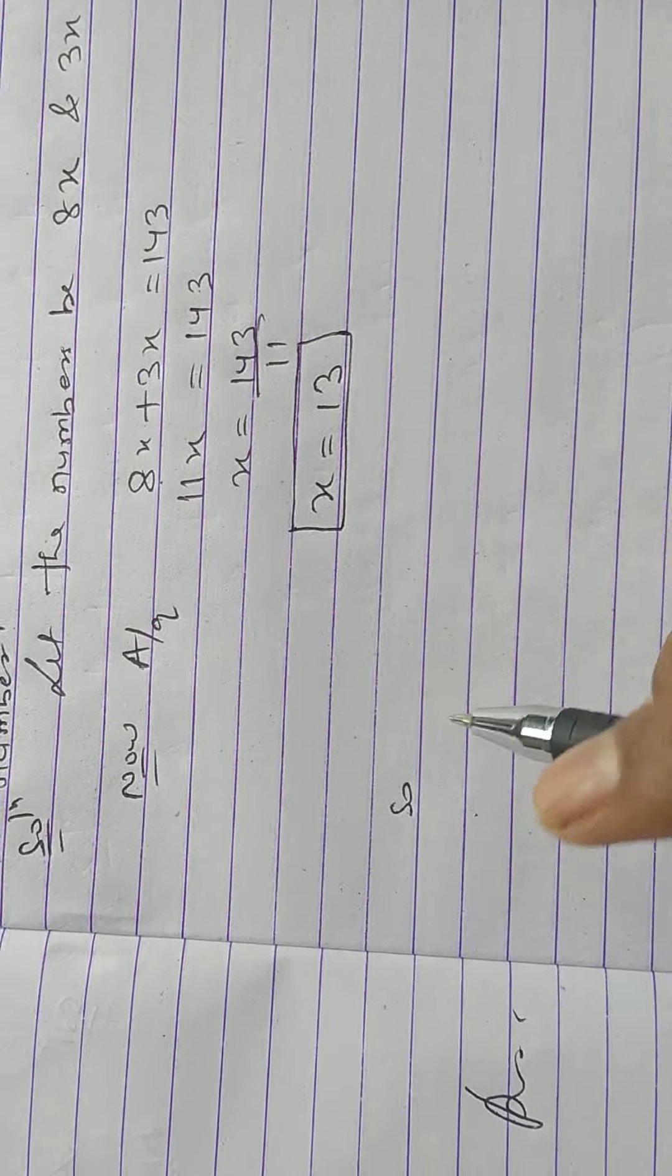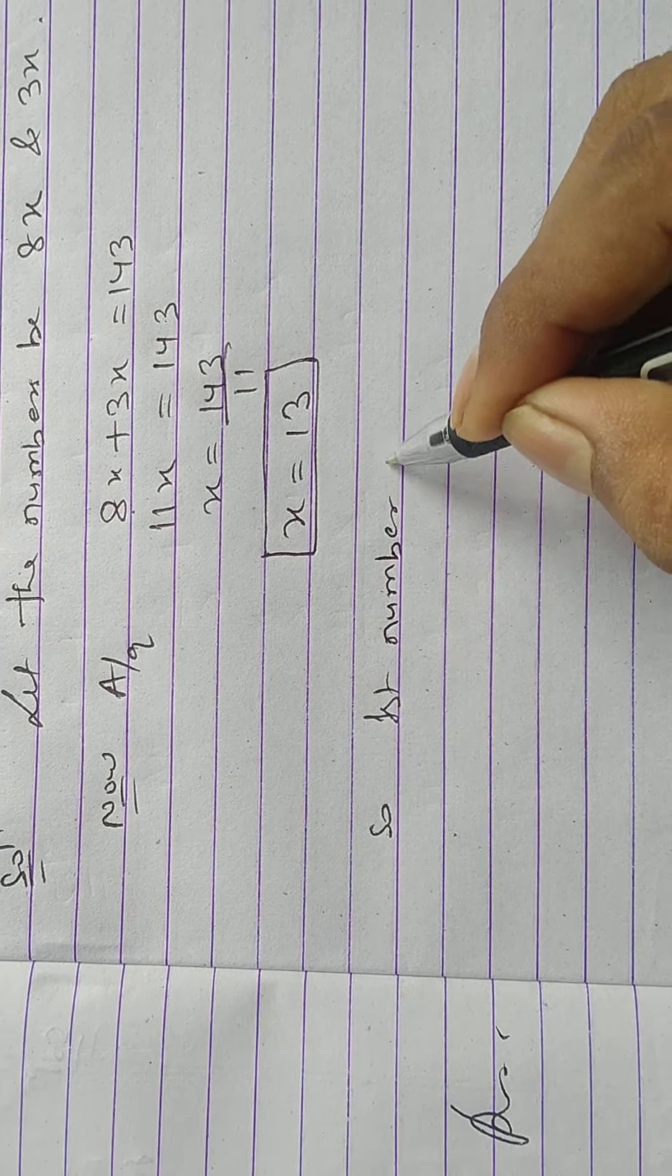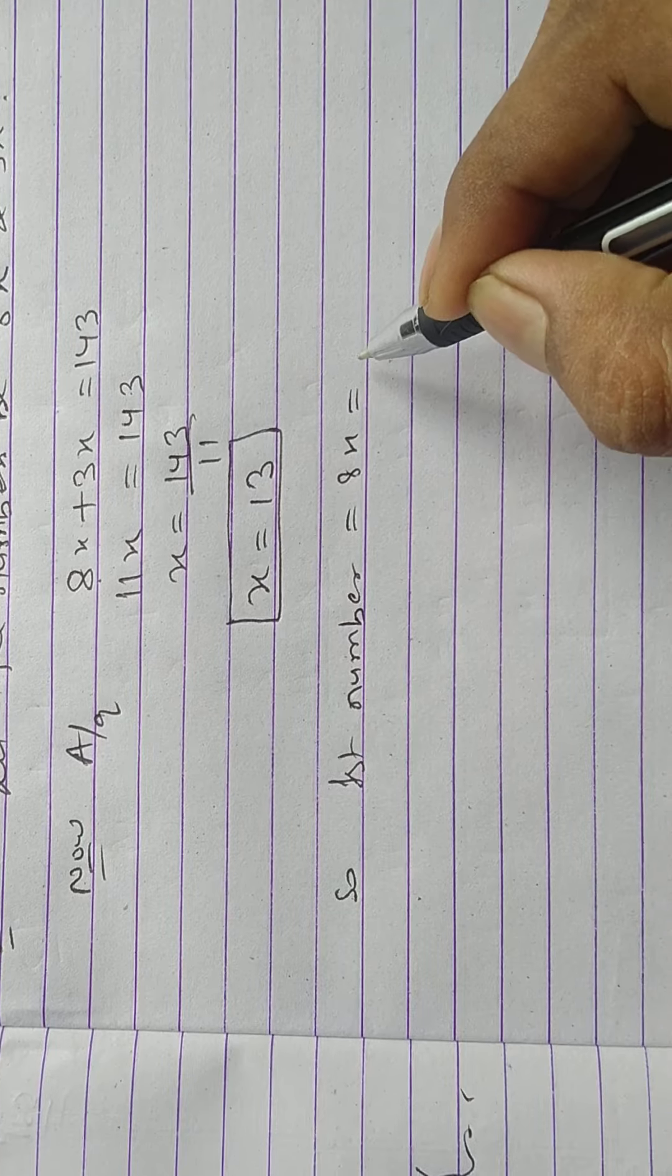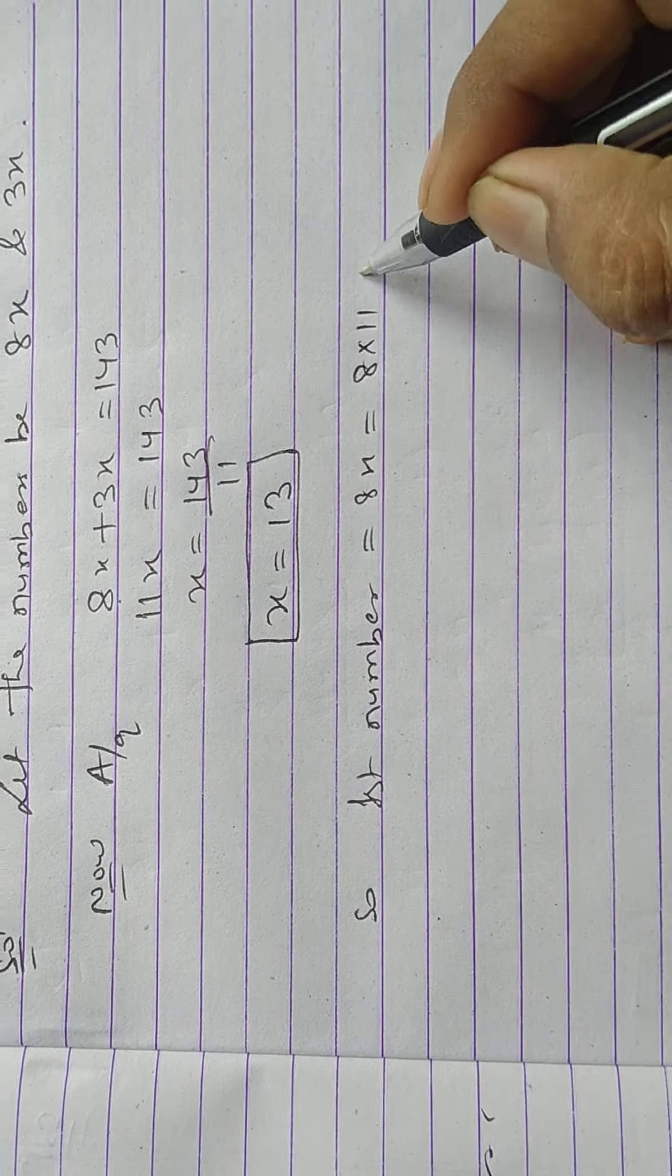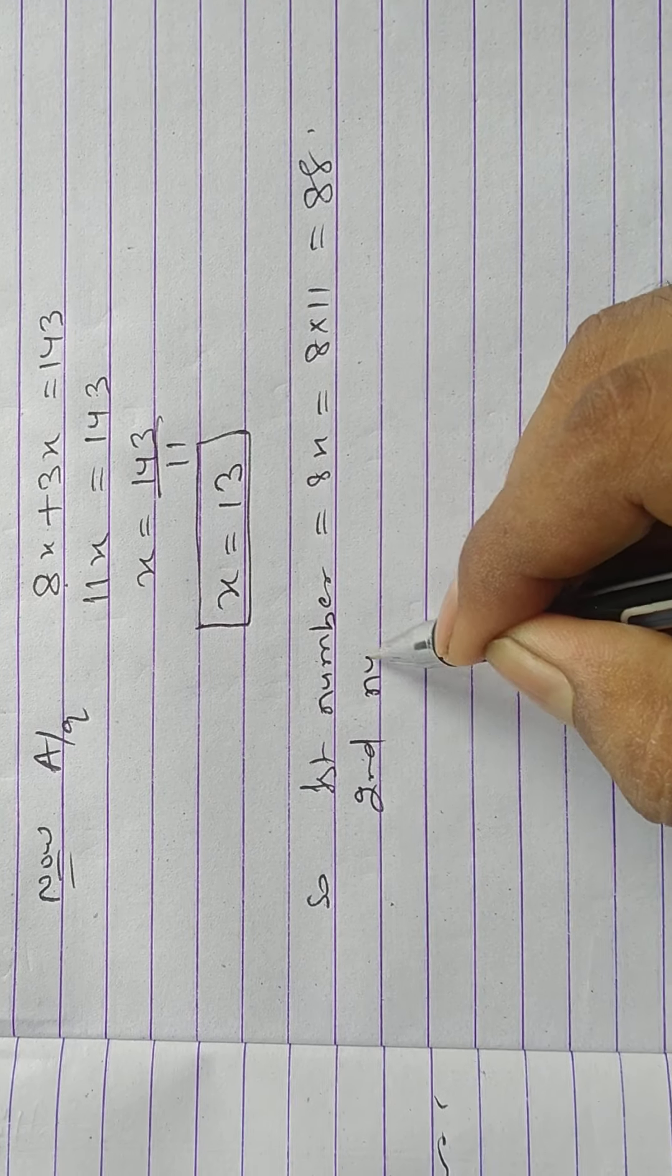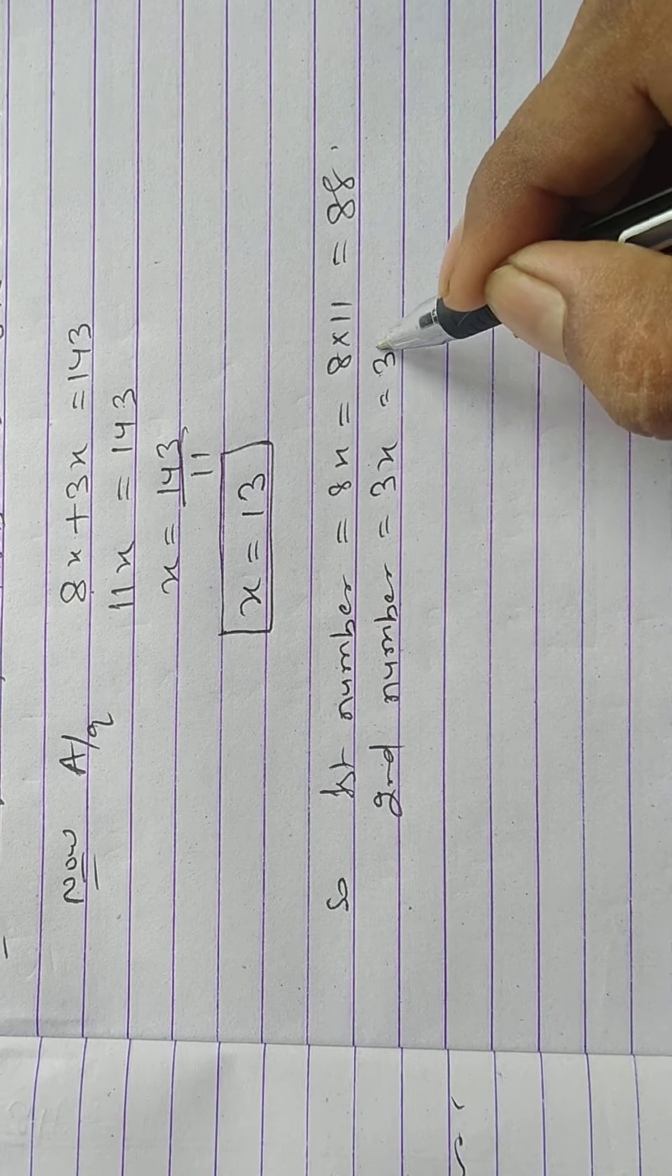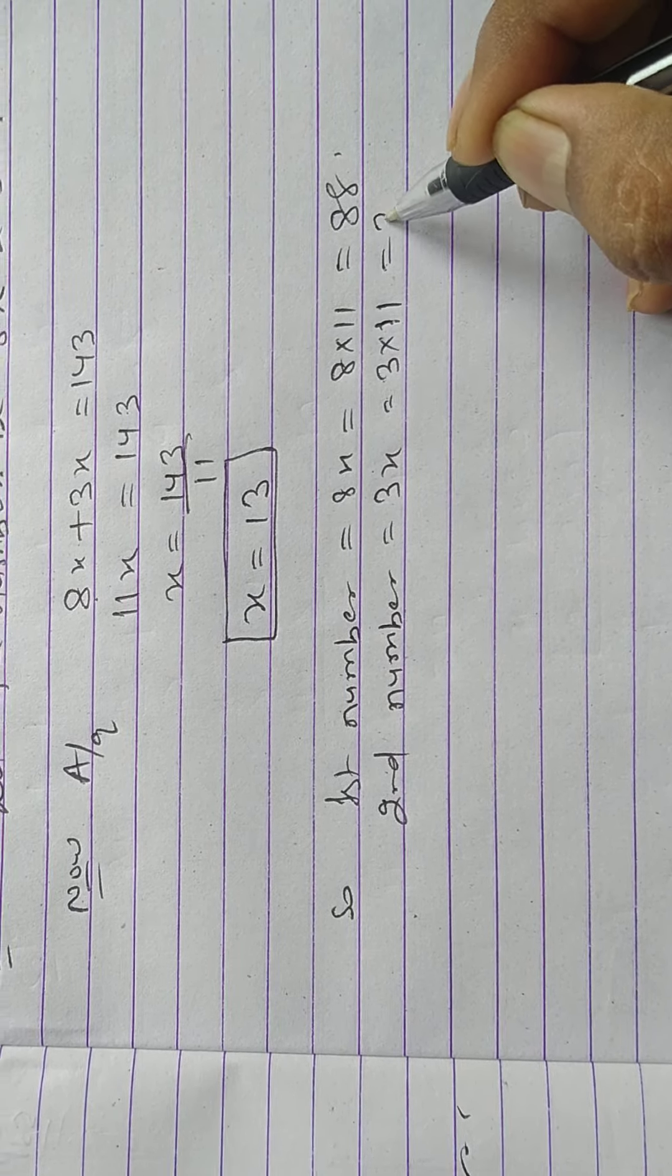First number equals 8x or 8 into 13 equals 88, and the second number equals 3x or 3 into 13 equals 33.